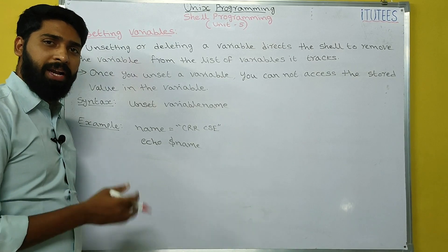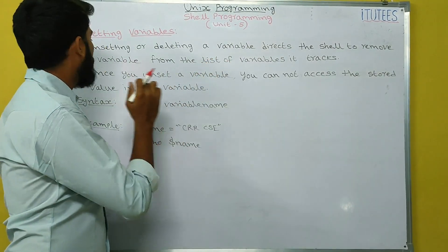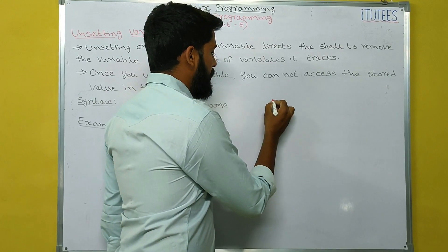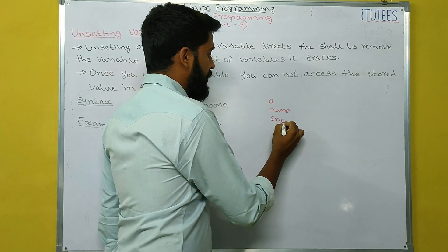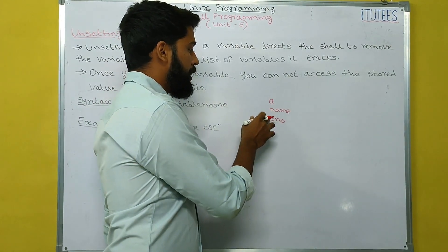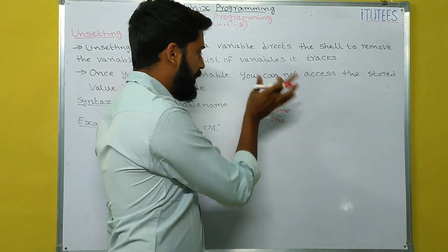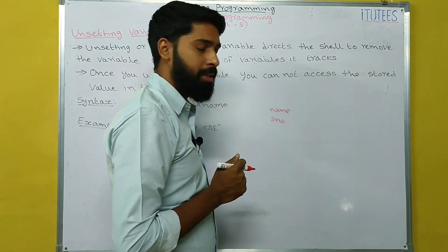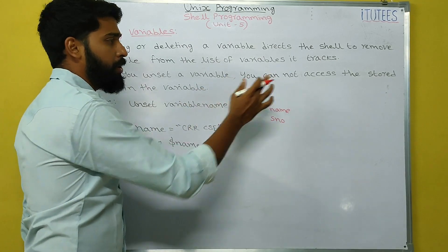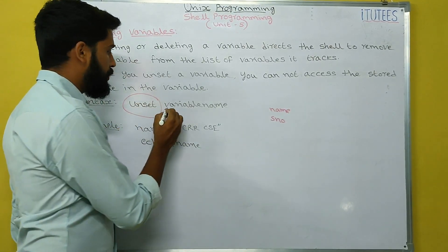Now we see how to unset or delete a variable. Unsetting a variable directs the shell to remove the variable from the list of variables it traces. For example, in a program with variables A, name, and student_number, when you access any variable the shell traces the variable name in its table. If you delete A, the shell cannot trace variable A anymore. Once you unset a variable, you cannot access its stored value. The syntax is: unset space variable_name.